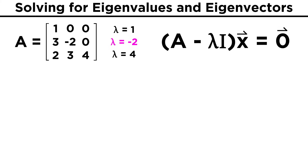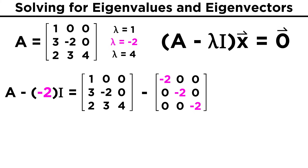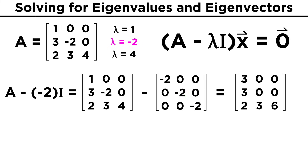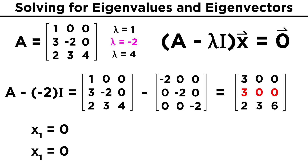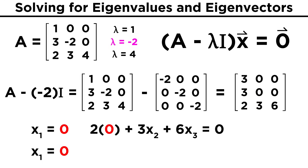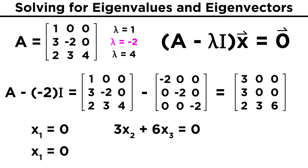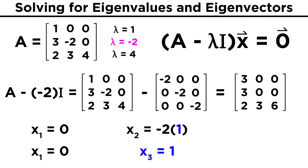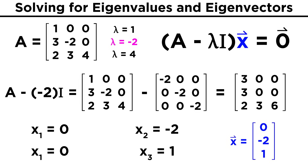Next we find the eigenvectors for lambda equals negative two. Plugging into A minus lambda I gives [3, 0, 0; 3, 0, 0; 2, 3, 6]. The first and second rows both tell us three X1 equals zero, so X1 must be zero. The final row becomes three X2 plus six X3 equals zero, or X2 equals negative two X3. Choosing X3 equals one makes X2 equals negative two, so the eigenvectors have the form [0, -2, 1].